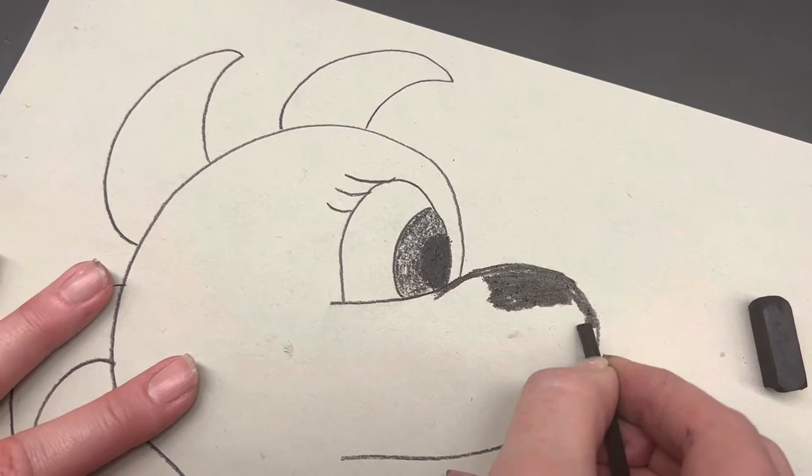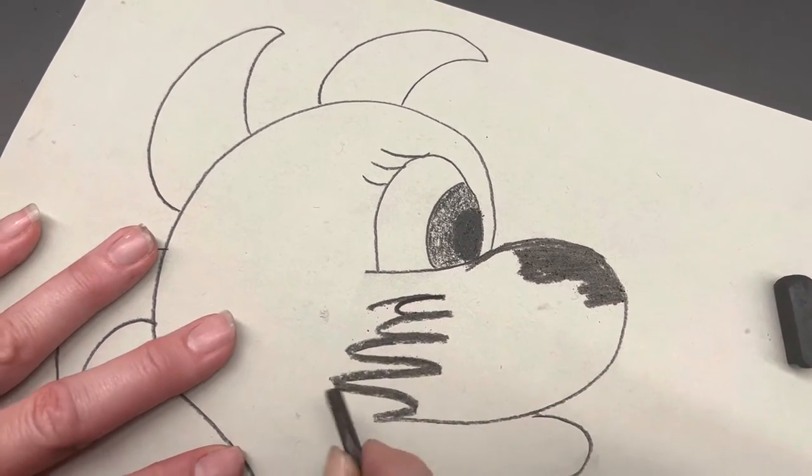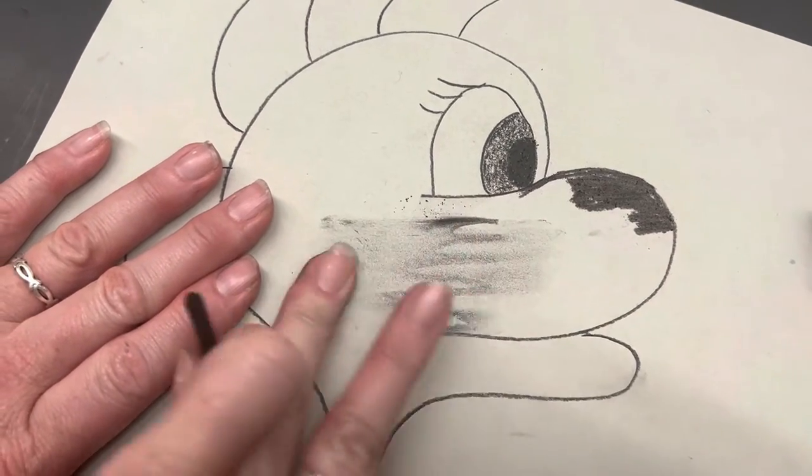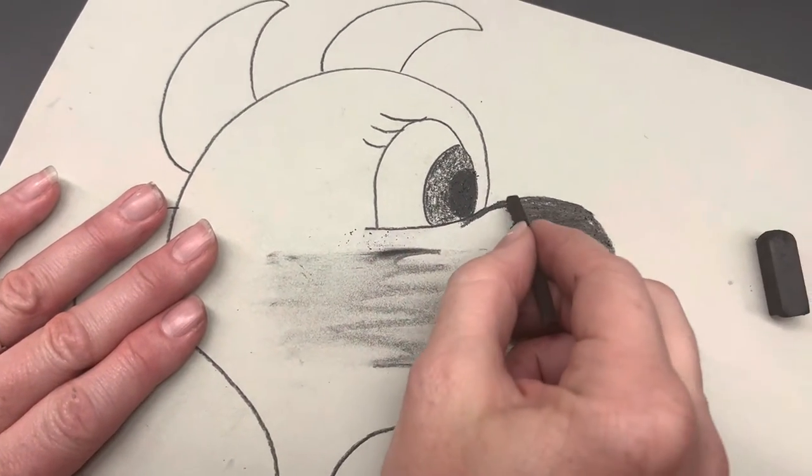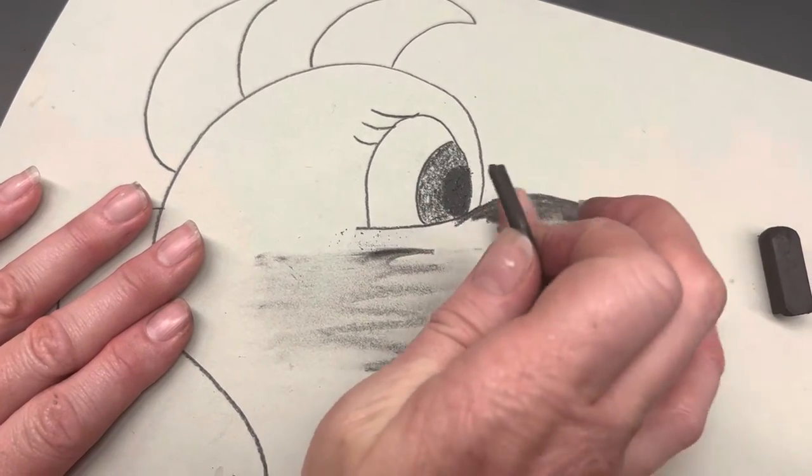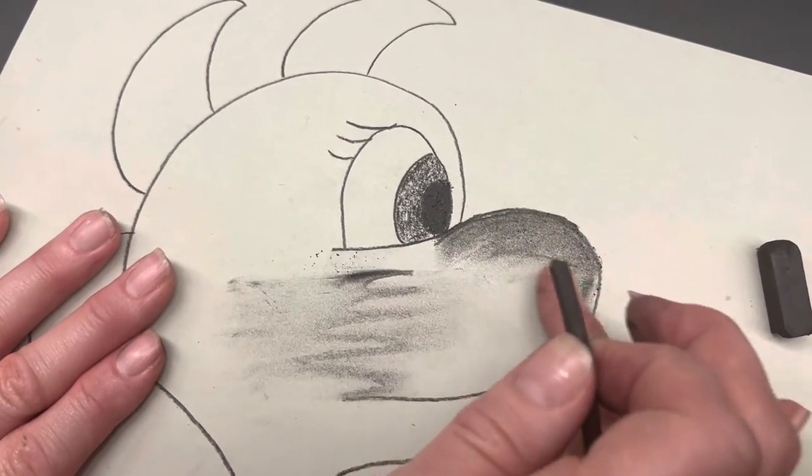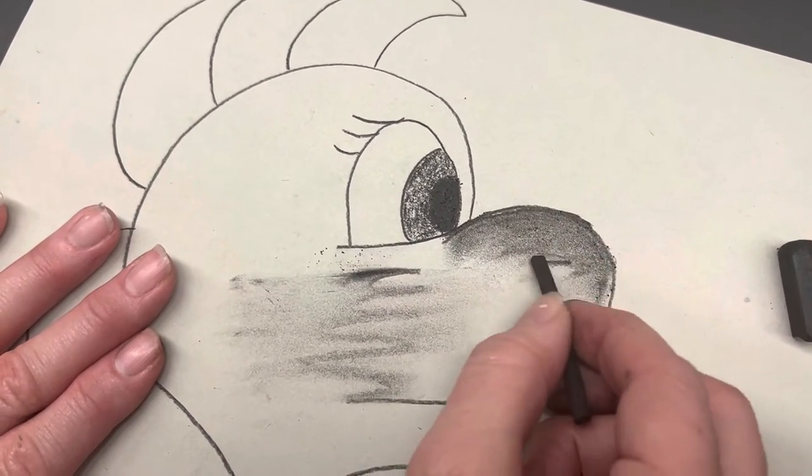And I'm adding the charcoal in a nice solid way. I'm not going like this and trying to rub it in everywhere. You don't want to do that. You want to add it a little bit at a time. And if you want to blend it out, it gets really light, but you want to blend it out as you go.